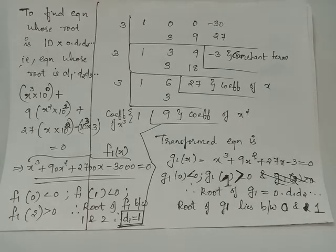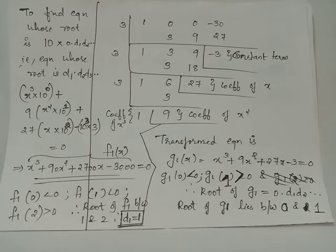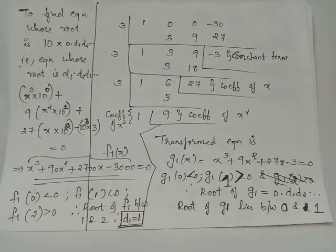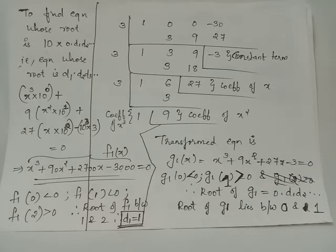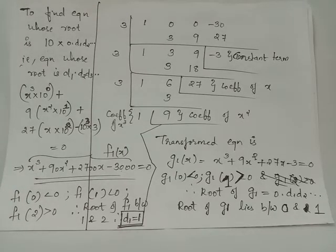Now we have to find d1. To bring d1 as the integral part, we look for an equation whose root will be of the form d1.d2d3 etc. We multiply the transformed equation using powers of 10: x³ by 10⁰, x² by 10¹, x by 10², and the constant term by 10³. This gives us the new equation f1(x) = x³ + 90x² + 2700x - 3000 = 0.